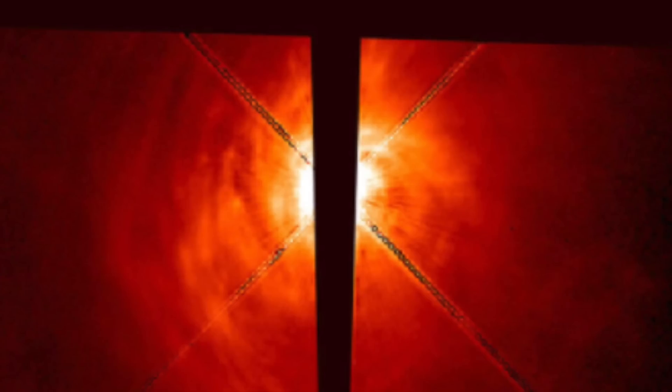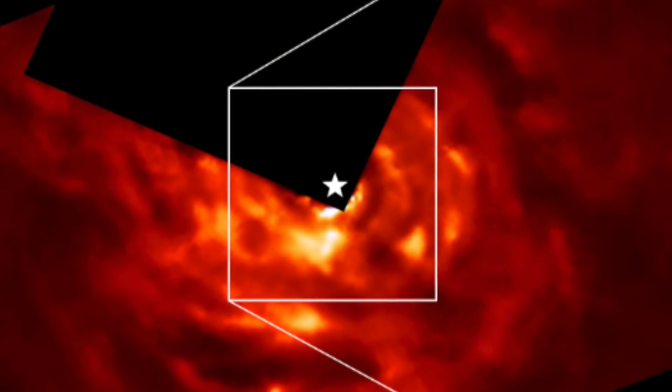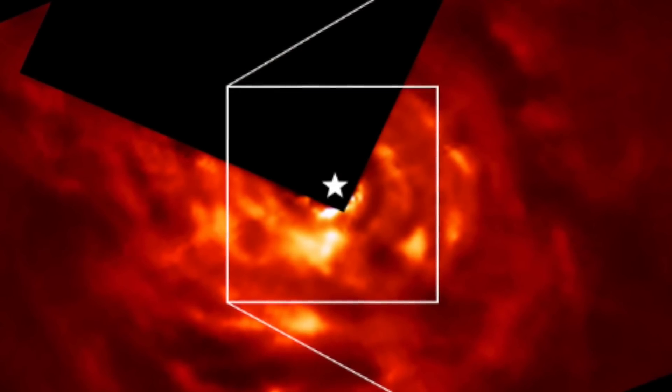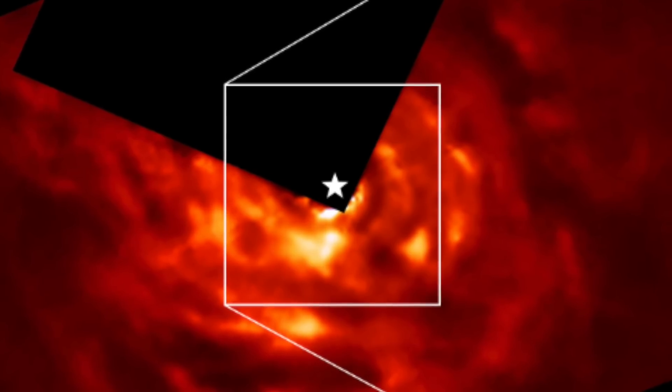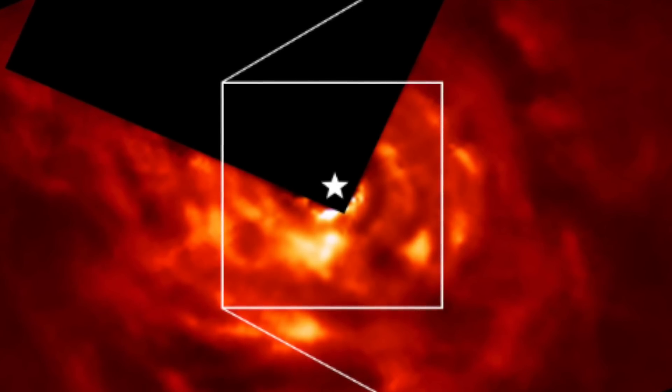The Hubble telescope has been taking images of AB Aurigae b for the past 13 years. Thayne Curry, the lead researcher of the study, said, Interpreting this system is extremely challenging. At first, researchers were unsure if AB Aurigae b was even a planet, but after 13 years, their minds were changed. They have found that this planet is about nine times the size of Jupiter.